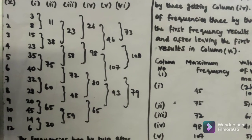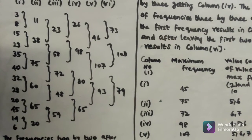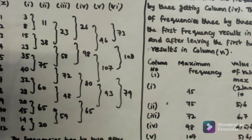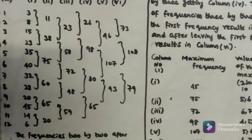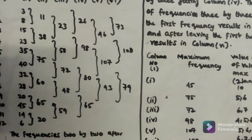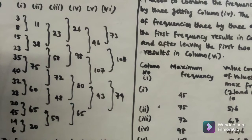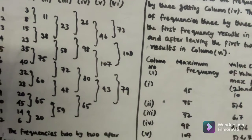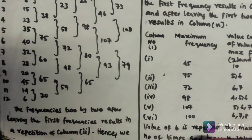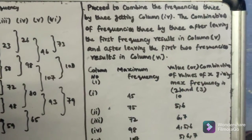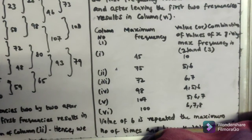Continuing: 23 + 35 = 58; plus 40 = 98. Next: 32 + 28 = 60; add 20 = 80. Then: 45 + 14 + 6 = 65. Further: 8 + 15 = 23; add 46. So we get 107, 93, 73, and 179.